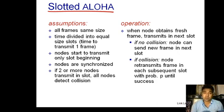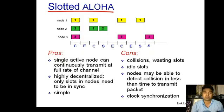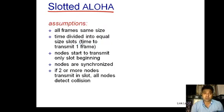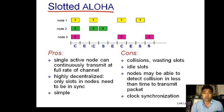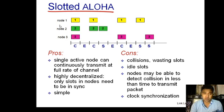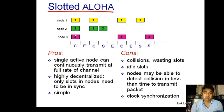Let's check out how this protocol works. In this diagram, the time axis shown at the bottom is divided into equal time slots, where each slot size equals the time to transmit one frame. At the start of the first time slot, all nodes — Node 1, Node 2, and Node 3 — have frames to send. They all overlap with each other, resulting in a collision — no success.